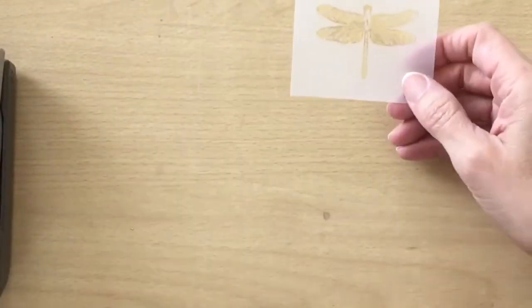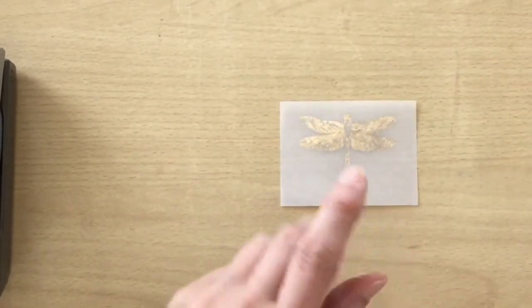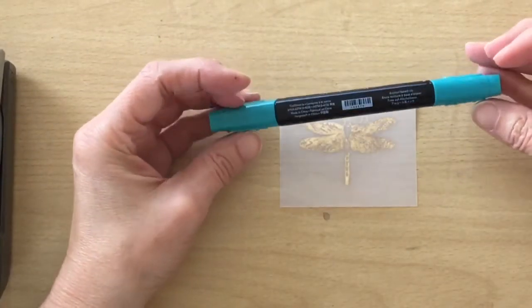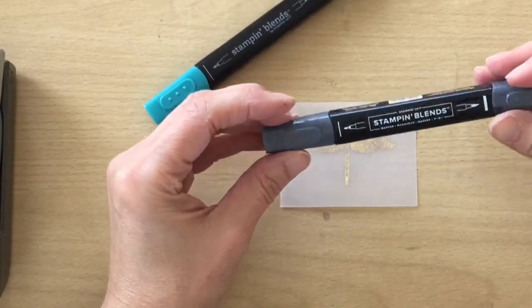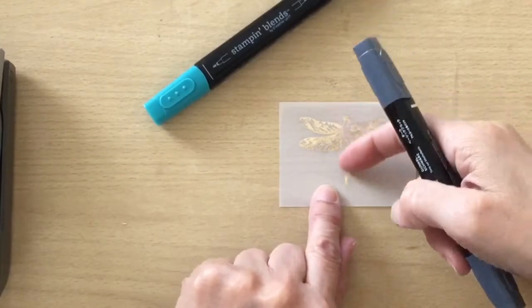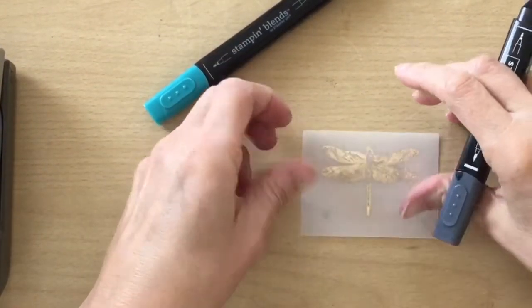So there's my finished dragonfly. And then turning it over, I'm just going to do a little bit of coloring. So I've got the dark Bermuda Bay and the dark Basic Black. I'm going to fill in the body in black and the wings in Bermuda Bay.